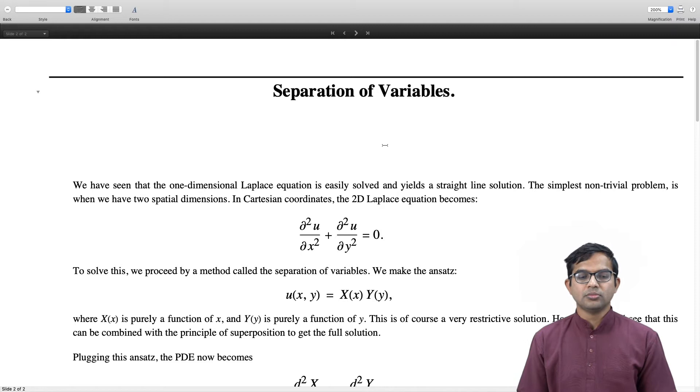The simplest non-trivial problem is when we have two dimensions. In Cartesian coordinates, the 2D Laplace equation is given by ∂²u/∂x² + ∂²u/∂y² = 0. To solve this, we make an ansatz called the separation of variables.